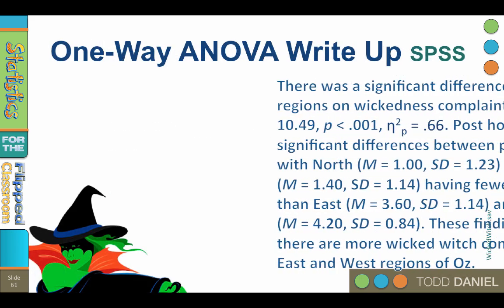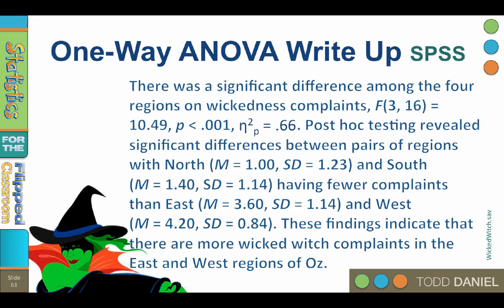And this is how you could write up the results in APA style. Feel free to pause and read it if you're working on a write-up. You'll see that I listed the means and standard deviations for each group, which comes from the descriptive statistics at the top of your output window. The last statement about the meaning of the findings would actually go in your discussion section if you were writing this up for a paper.